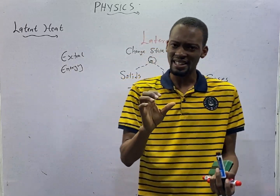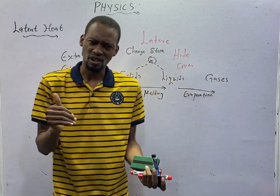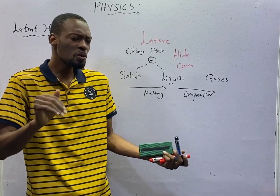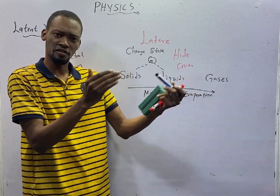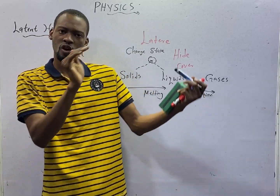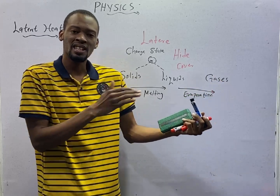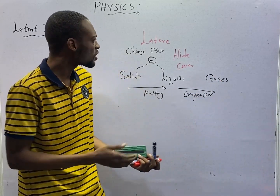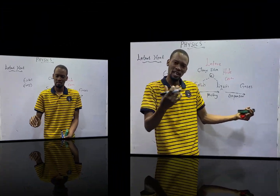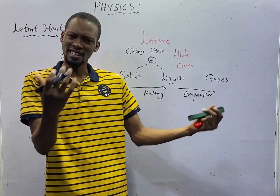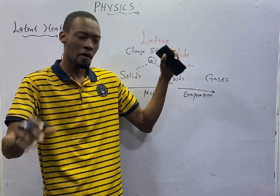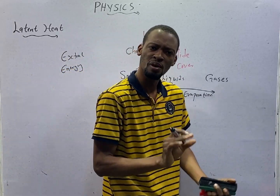Latent heat works to change the state of matter but without changing the temperature. This heat can change the state of matter without the temperature of the substance increasing or reducing, irrespective of the state that it is. This is one of the reasons we refer to it as latent heat. We can therefore say that latent heat is the heat that changes the state of matter without changing temperature.